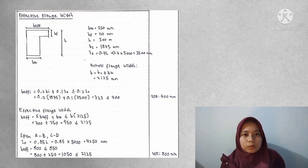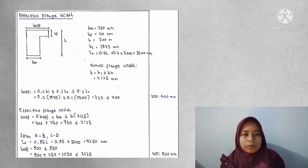Therefore, the actual flange width is 2,125 mm. For BEF, we use 700 mm. For BEF at sections AB and CD, it is 800 mm.